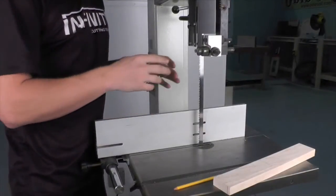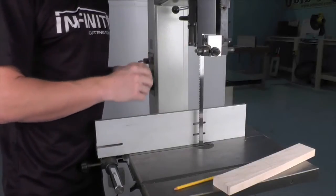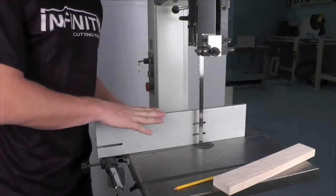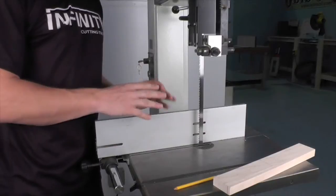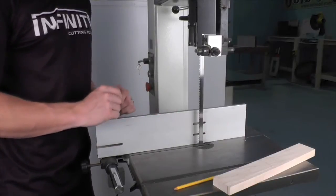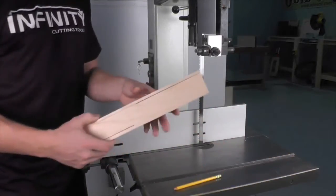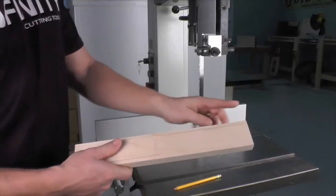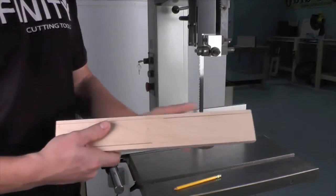Once I have the blade tensioned and the guide set, the last thing I need to do is set my fence for the drift of the blade. This is a very easy procedure to do. You want to take a piece of scrap material and make sure that the edge is jointed nice and straight.